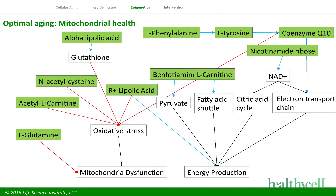In the mitochondrial area, how do we help our cells make more energy? Our clinical trials showed a dramatic difference when we looked at whether people felt more energetic and felt better. In energy production, alpha-lipoic acid, benfotiamine, nicotinamide, and ribose — all the things that help your cells make more ATP — were included, along with compounds that inhibited oxidative stress and down-regulated genes inside the mitochondria.